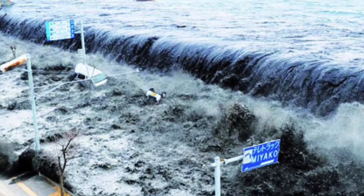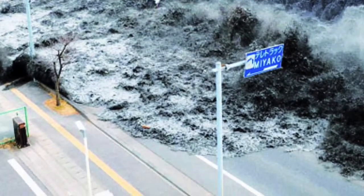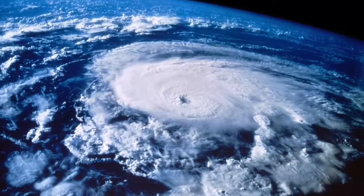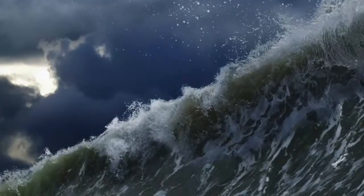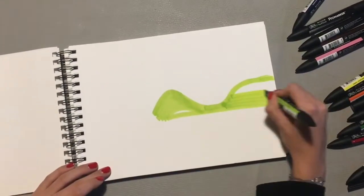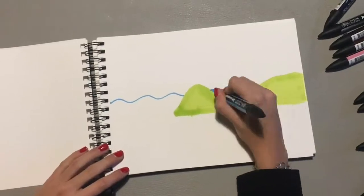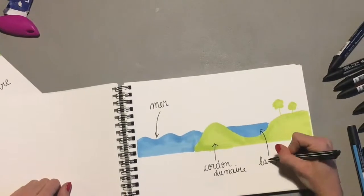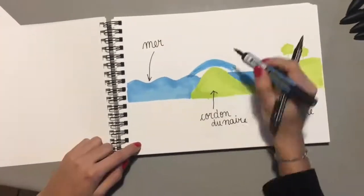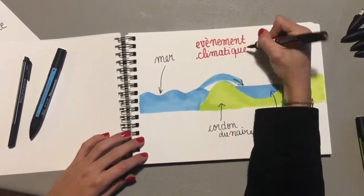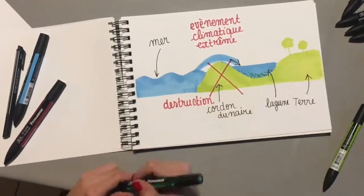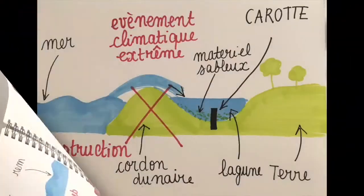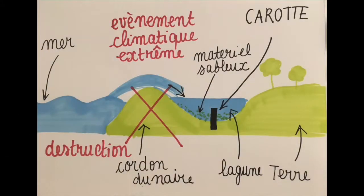Le travail sur les carottes s'explique par le fait que les ouragans, les tempêtes et les tsunamis laissent des traces sédimentaires dans les archives côtières, comme les lagunes par exemple. Une lagune est une étendue d'eau de mer comprise entre la terre ferme et un cordon dunaire. Il n'y a donc pas de courant et normalement aucun échange avec la mer. Néanmoins, la houle et le vent créés par une catastrophe naturelle détruisent les cordons dunaires. Il n'y a donc plus de frontières entre les deux milieux et un échange d'eau mais aussi de matériel sableux se crée.